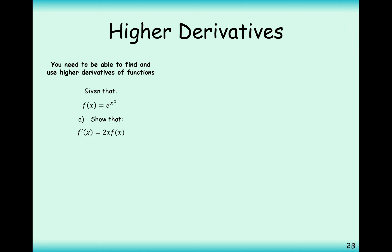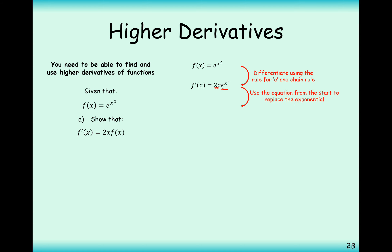Moving on to the next example: f(x) = e^(x²). We're asked to show that f'(x) = 2x·f(x). Using the chain rule, the inside function is x², the outside is eˣ. Differentiating the inside gives 2x, and the outside eˣ differentiates to itself. So f'(x) = 2x·e^(x²). Since e^(x²) is defined as f(x), we can replace it to get f'(x) = 2x·f(x), which is what we needed to show.